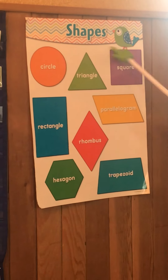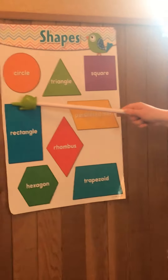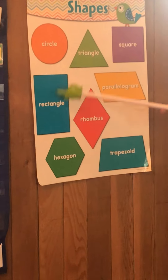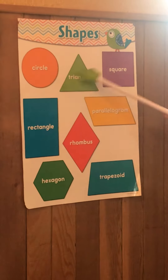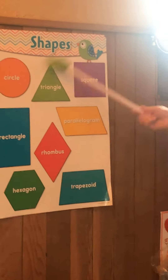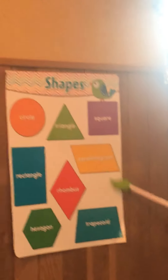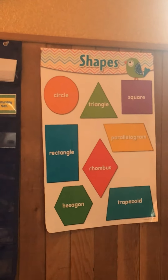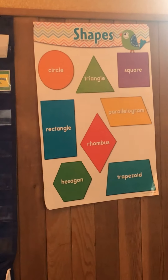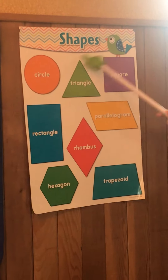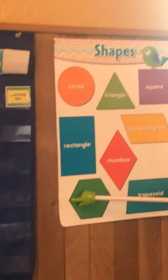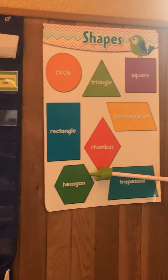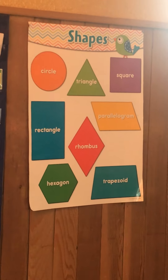Let's go to Charlie. Charlie, what shape is this blue shape with two long sides and two short sides? Two long sides, two short sides — it's a rectangle. Hazen, this blue shape is a trapezoid. Very good, Hazen! Let's go to Bentley. Bentley, what shape is the green shape with six sides? It's a hexagon. Thank you, Bentley.